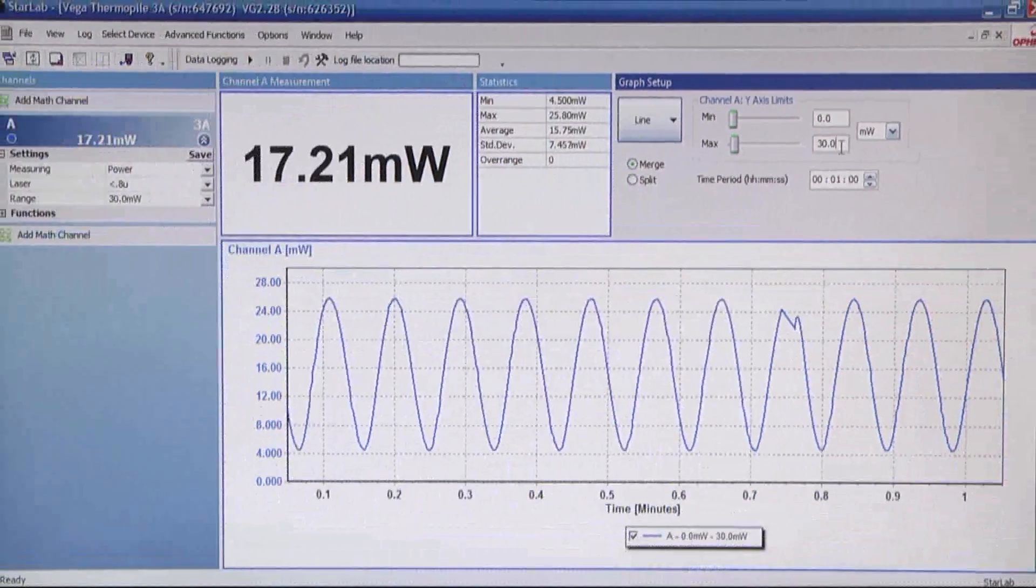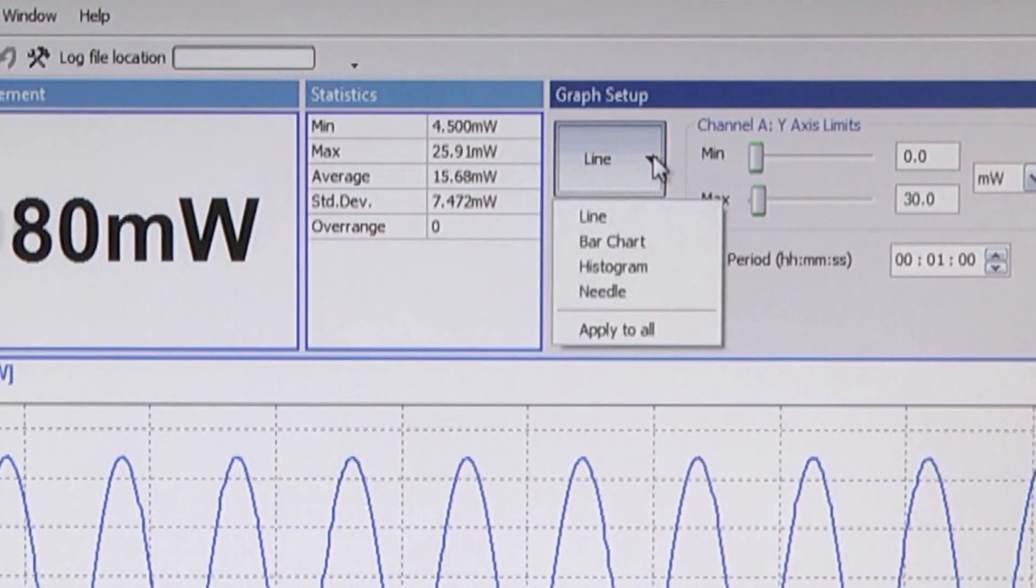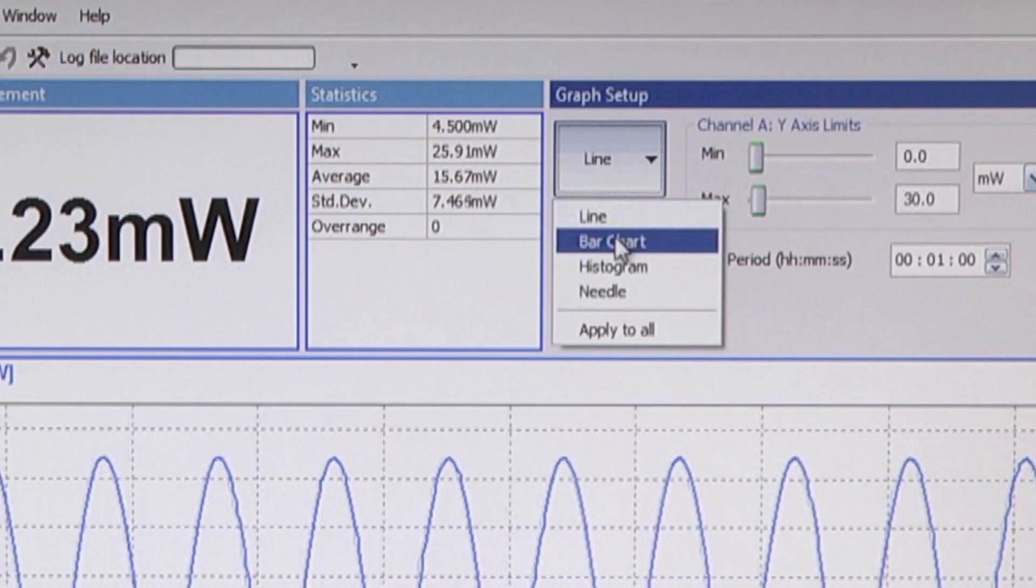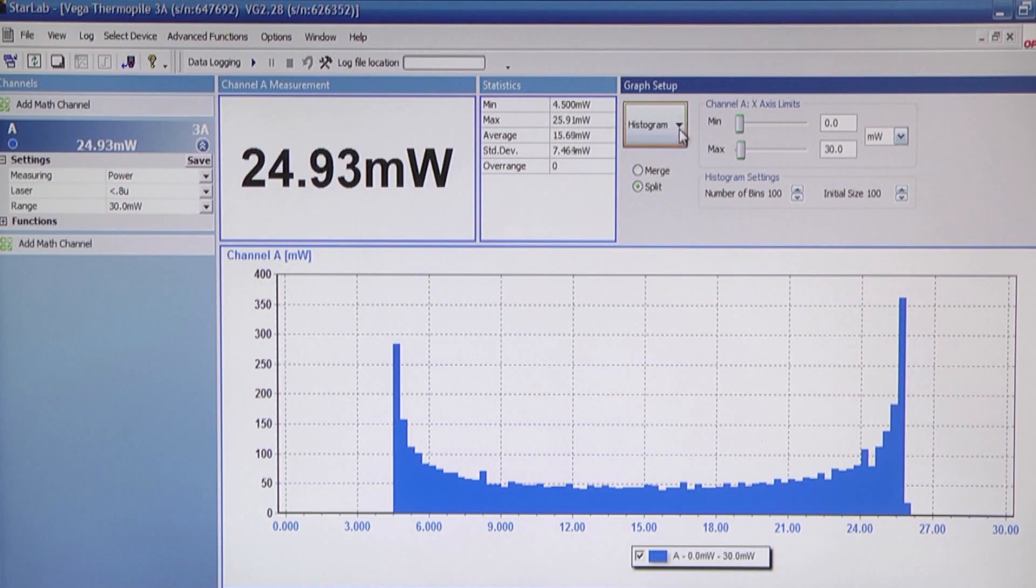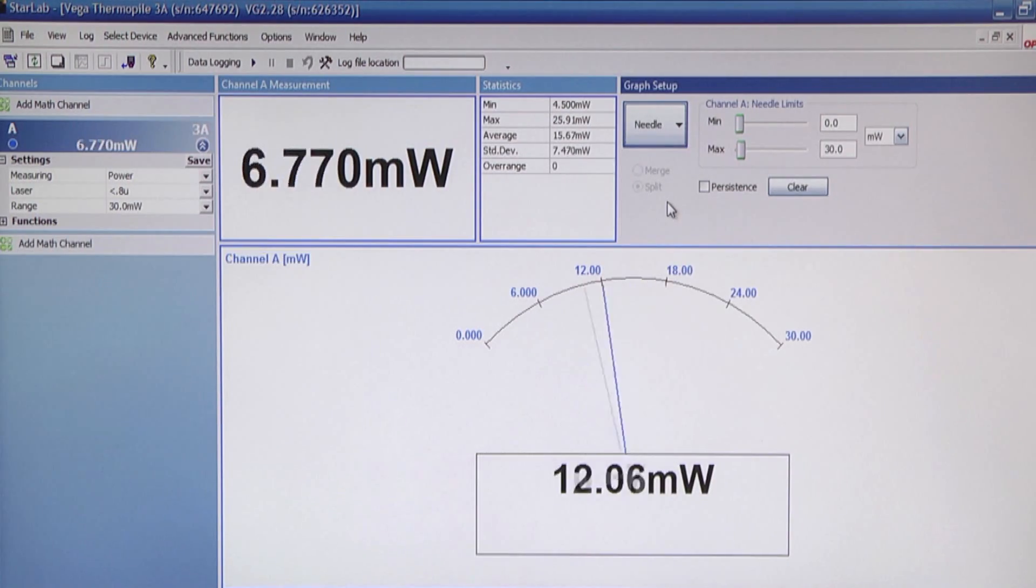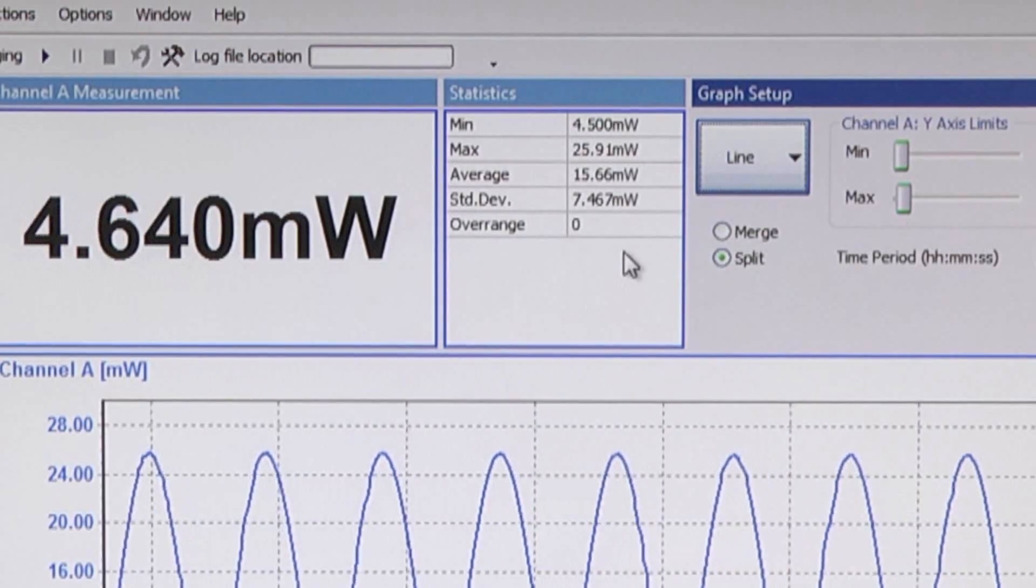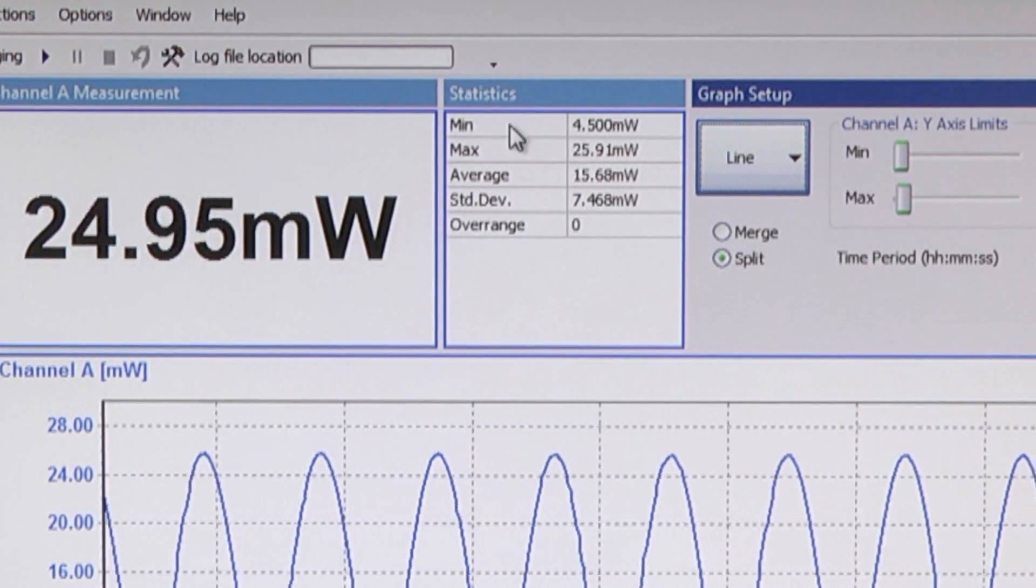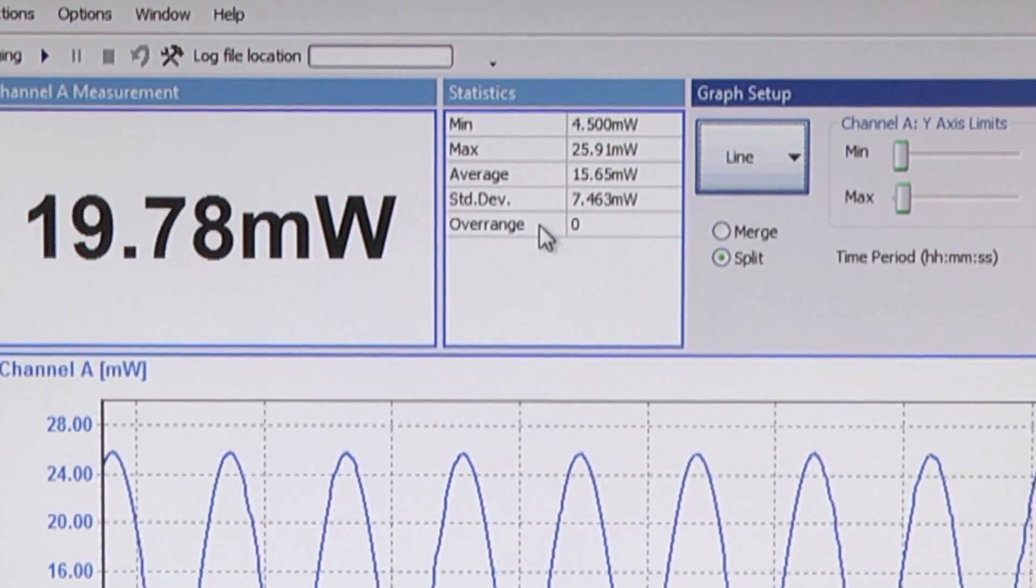By clicking on the graph select button we can display other graph types as well: bar chart, histogram, or needle. In the statistics area here, various statistics are displayed: minimum, maximum, average, standard deviation, and the number of readings that were over range.